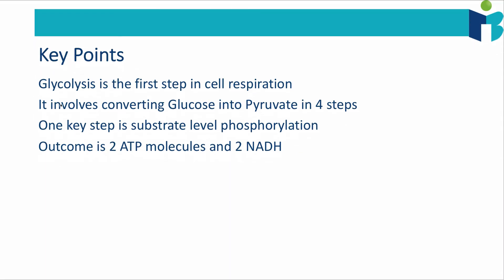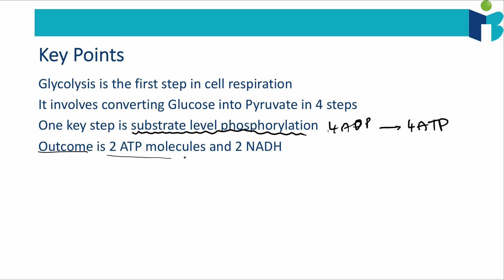The key points from this video: glycolysis is the first step in cell respiration, it involves converting glucose into pyruvate in four steps, and the most important step to remember is substrate level phosphorylation, where we take four ADP molecules and convert them into four ATP molecules. The outcome therefore is two ATP molecules and two NADH. In the next video we're going to talk about the next process of cell respiration, which is the link reaction.